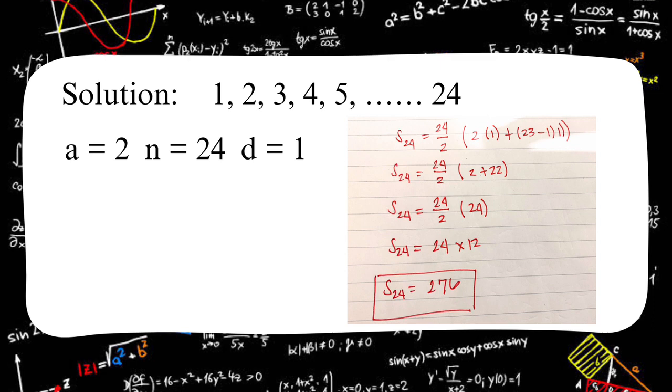And last, d will be 1 as the common difference of the sequence, as 2 minus 1 is 1, 3 minus 2 is 1, and so on for the rest of the numbers. The given formula will be changed into S sub 24 is equal to 24 over 2 times 2 plus 22. Then S sub 24 is equal to 24 over 2 times 24.